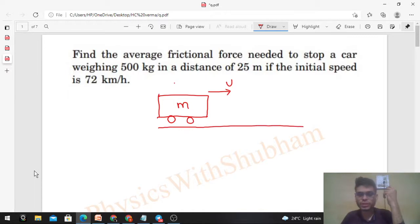At a distance d, which is also given. So m, u, and d are given. Find the average frictional force. This is a simple problem - you can solve it in two ways: one using work-energy theorem and the other using simple kinematics.